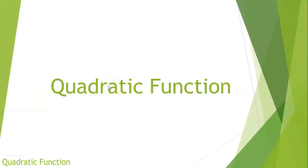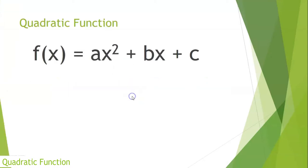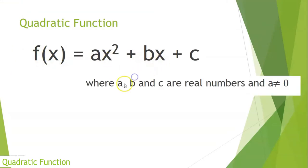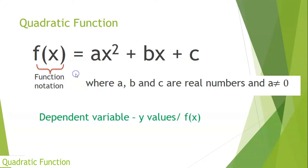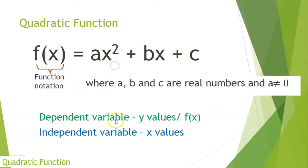Hello everyone. In this video, we will learn all about quadratic functions. A quadratic function is given as f(x) = ax² + bx + c, where a, b, and c are real numbers and a should never be zero. In this case, f(x) is considered as the function notation and is also considered as the dependent variable, while x is considered as the independent variable.